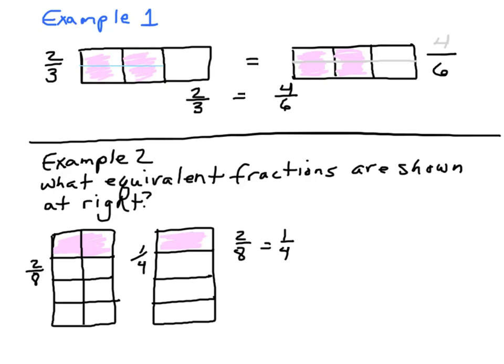So what we can see is here. We have our rectangle and we have divided it into one, two, three, four, five, six, seven, eight — and two of the eight are shaded. Here, we have a similar rectangle, and instead of dividing it into eighths, it's divided into fourths. You can see one, two, three, four — and it's divided to make it into halves. So we see that I have colored in one of these four. We can see that two eighths and one fourth are equal.